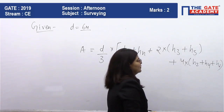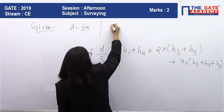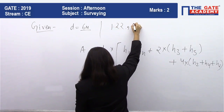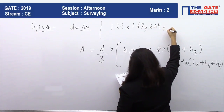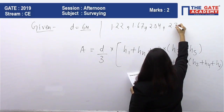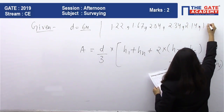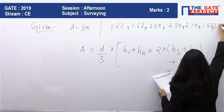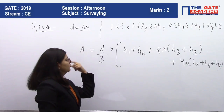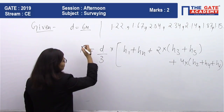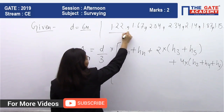The offsets given are 1.22, 1.67, 2.04, 2.34, 2.14, 1.87, and 1.15. The interval d is 6, so d/3 = 6/3 = 2. h₁ is the first offset 1.22, and hₙ is the last offset 1.15.